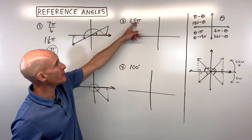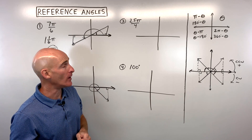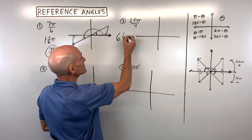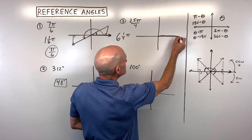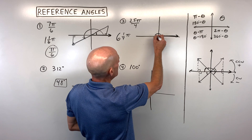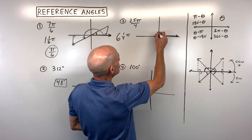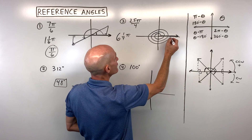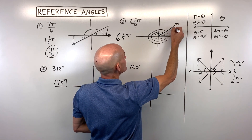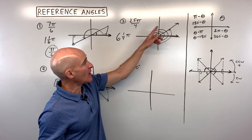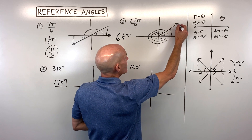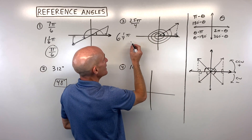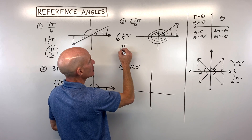For number 3, another radian one: 25 pi over 4. We have an improper fraction, so 4 goes into 25 six whole times with one left over — that's 6 and 1/4 pi. Pi is 180, so we start along the positive x-axis and go pi, 2 pi, 3 pi, 4 pi, 5 pi, 6 pi, then 1/4 of pi more — that's our terminal ray. We drop a perpendicular to the x-axis and the reference angle is pi over 4.